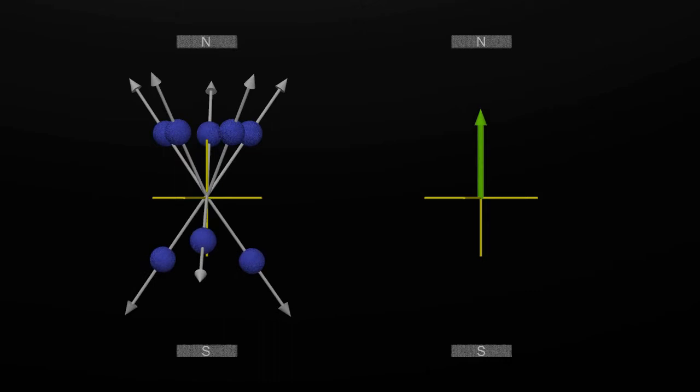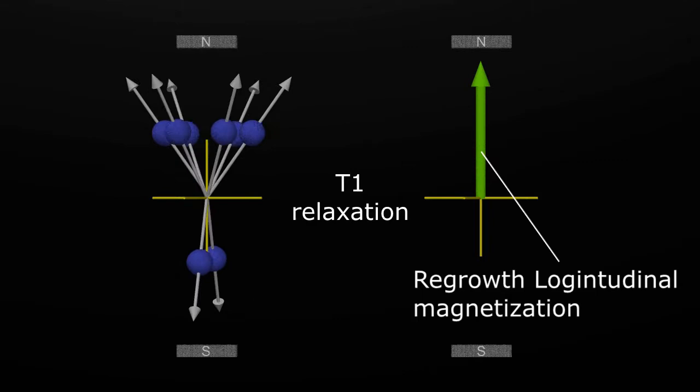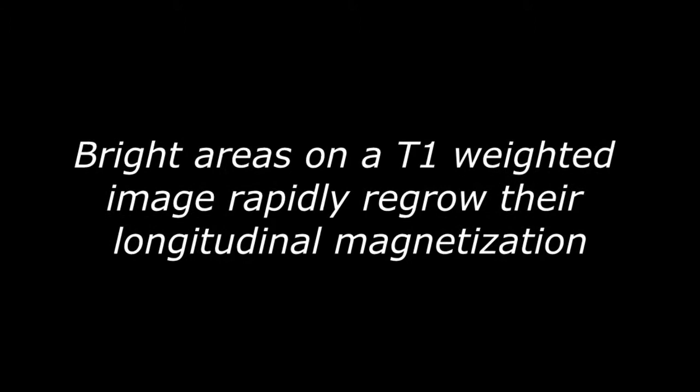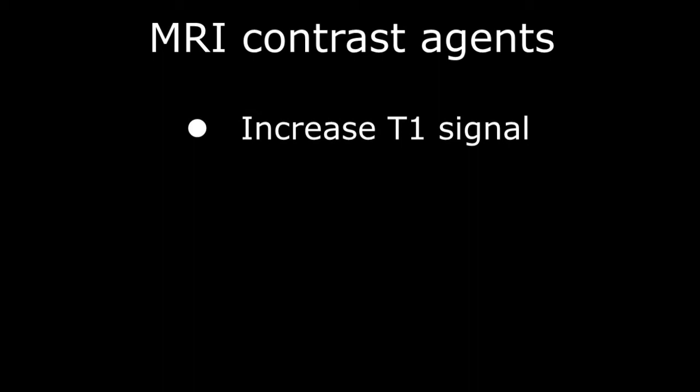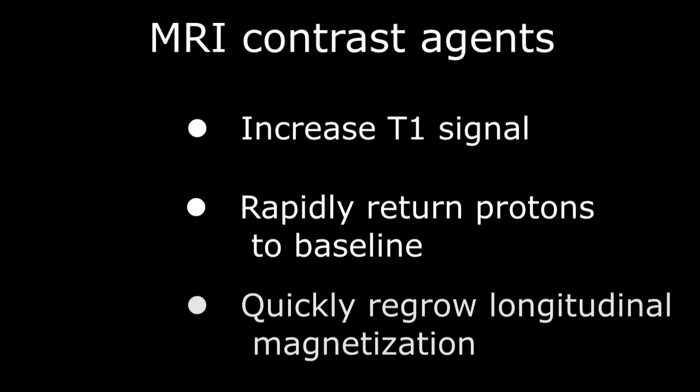Things that are bright on a T1-weighted image regrow the longitudinal magnetization quickly. Bottom line, MRI contrast agents are designed to increase the T1 signal of an image by returning the protons to their baseline state more rapidly and quickly regrowing the longitudinal magnetization. The agent most commonly used for this purpose is the rare earth metal gadolinium.